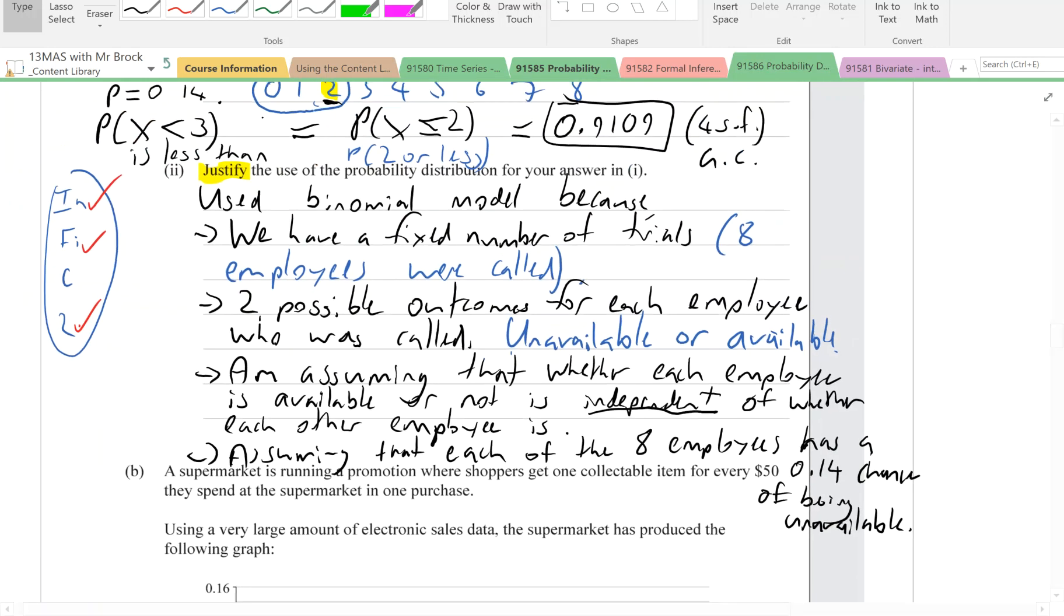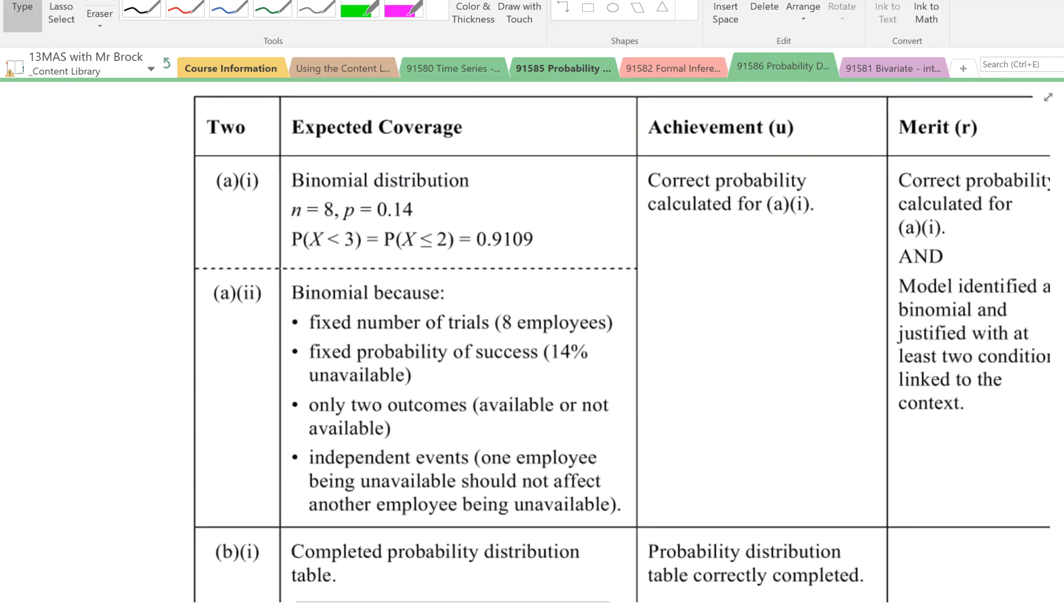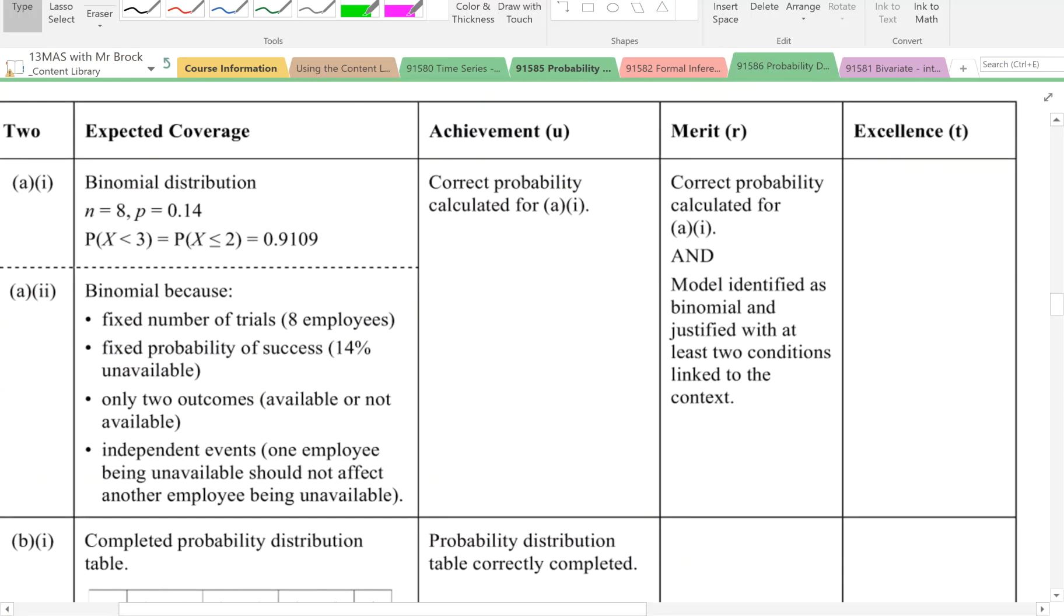Let's look at the marking scheme. Look at the criteria. For achievement, you just have to have the correct probability of 0.9109.